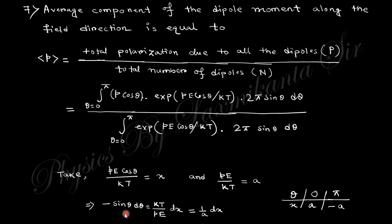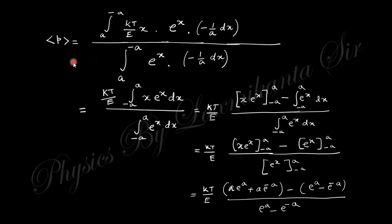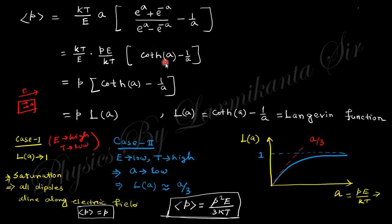Substituting a = pE cosθ/kT, so that a = pE/kT, and using -sinθ dθ as the differential, and continuing the integration by parts, you finally obtain the expression involving the hyperbolic cotangent: the average dipole moment equals p[coth(a) - 1/a]. This function is known as the Langevin function, and this result is known as the Langevin-Debye equation for dipolar polarizability.